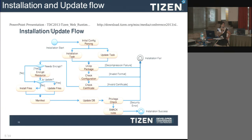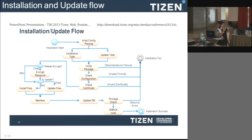The WRT installer first checks the config file and determines whether it is an installation or an update. Based on that, a different workflow is followed. After that, it checks the certification validation. After meeting the certification validation, it checks whether the files are encrypted or not, and then it decrypts the application. It provides security by encrypting the HTML, JavaScript, and CSS files.